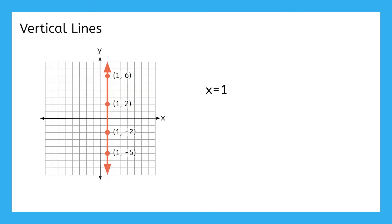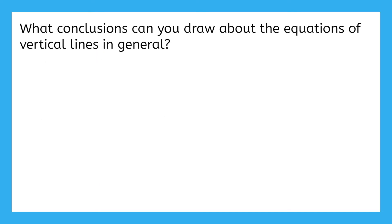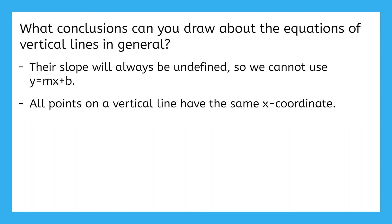Now that we've looked at a few of them more closely, what can you conclude about the equations of vertical lines in general? Since all vertical lines have an undefined slope, we cannot use slope-intercept form to write their equations. Instead, since all of the points on a vertical line have the same x-coordinate, we can describe the points on the line with an equation that is x equals whatever that coordinate is.